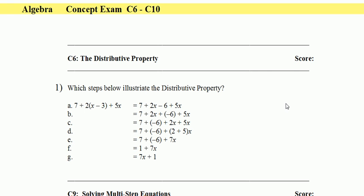This is Algebra Concept Exam, Concepts 6 through 10 Review. In this first problem, we're going to identify the steps below that illustrate the distributive property. We look at step A: I see 2 times the quantity x minus 3, and that equals 2x minus 6. We can see that the 2 has been distributed to the x and distributed to the negative 3, giving us 2x minus 6. So one of our answers has to be A.